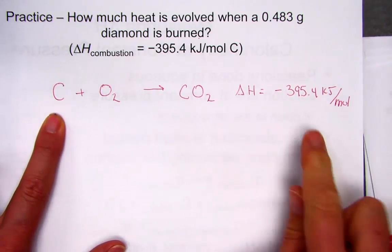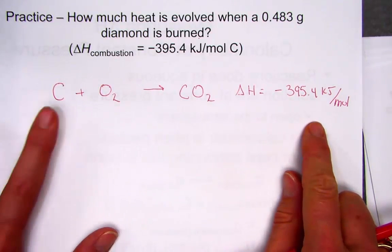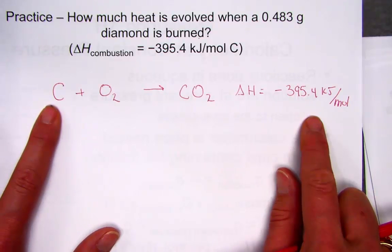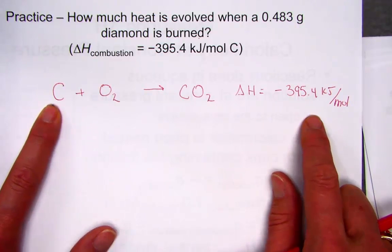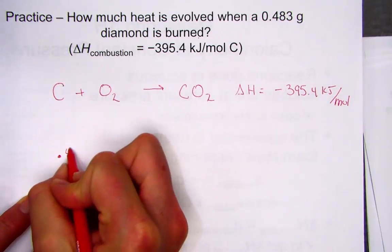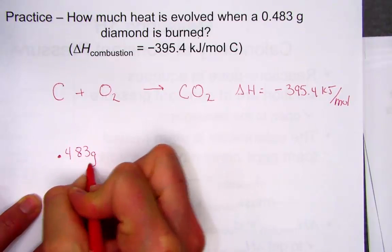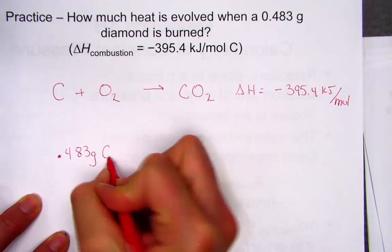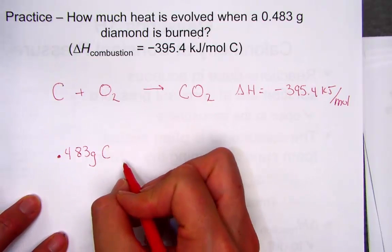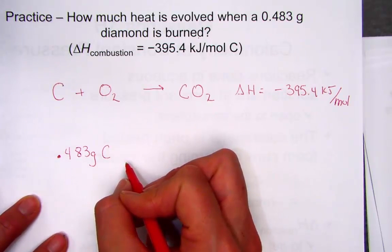To turn this into a thermochemical equation, the heat of combustion is negative 395.4 kilojoules for every mole of carbon. Every one mole of carbon releases 395.4 kilojoules of energy when it combusts. Suppose instead of one mole, we start with 0.483 grams of diamond — how much heat energy would be evolved?